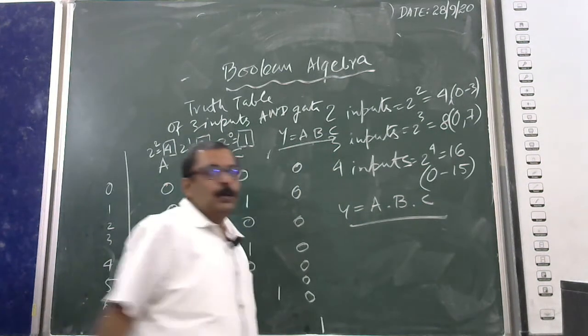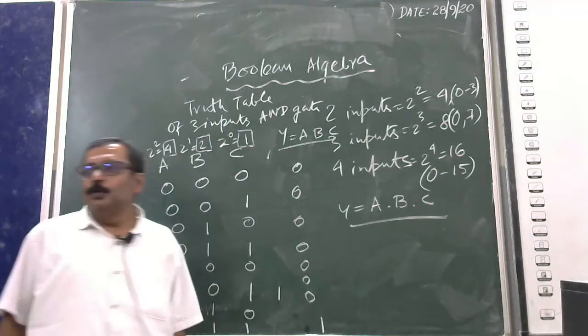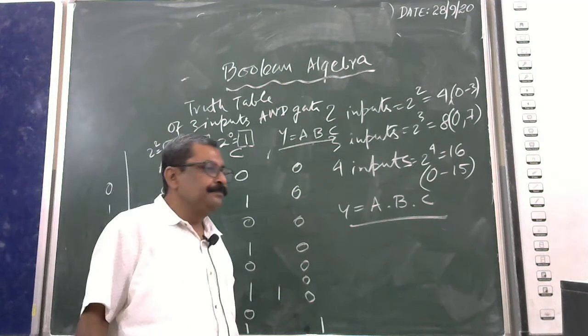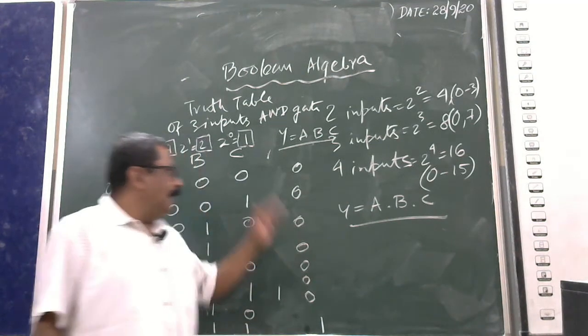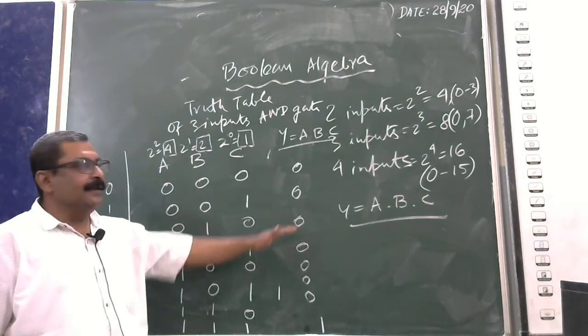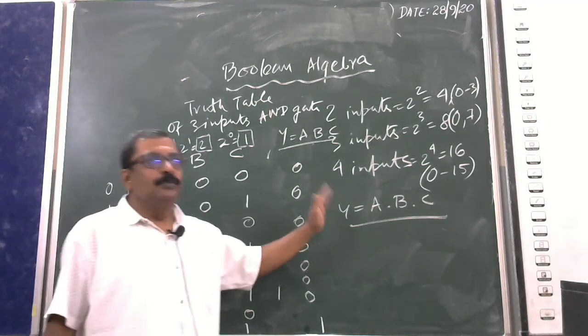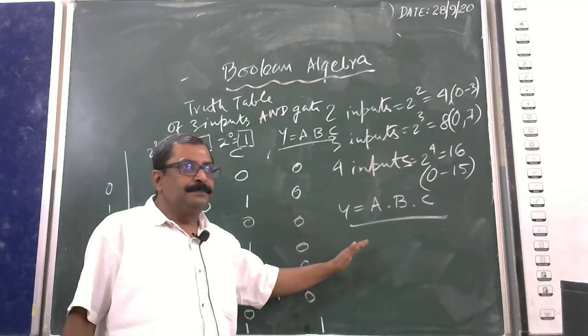The expression for the 3-input AND gate is Y = A·B·C. You can do the same procedure for a 3-input OR gate.